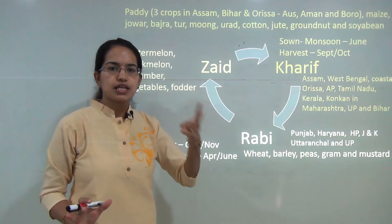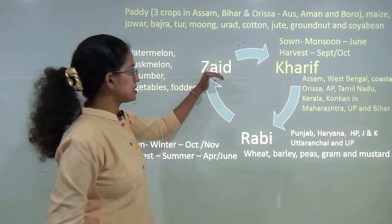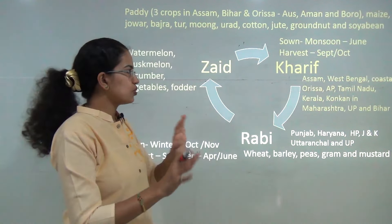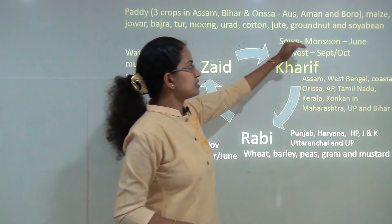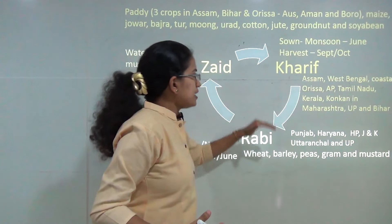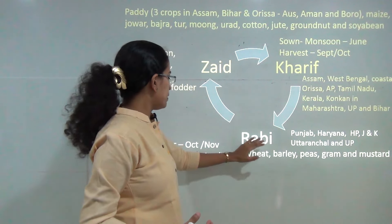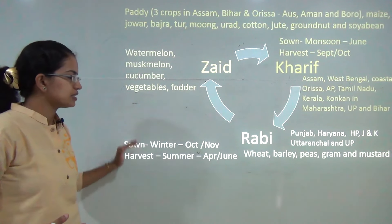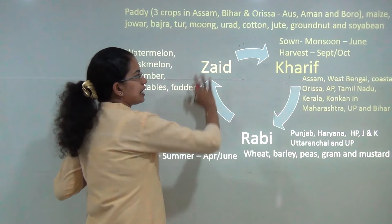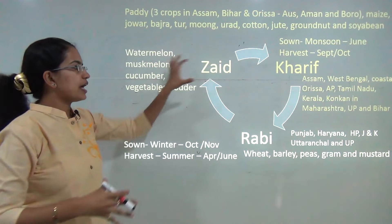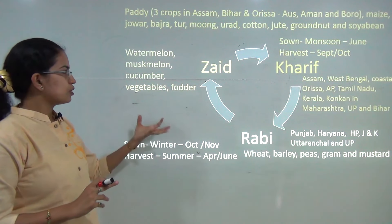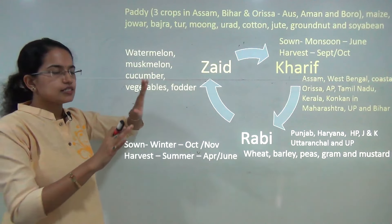There are predominantly three crop seasons: the Kharif season, Rabi season, and Zayad season. Kharif crop is sown in monsoon and harvested in September or October. As soon as the Kharif crop is done, Rabi crop is sown in winter and harvested in summer in the months of April to June. The intermediate period between Rabi and Kharif is occupied by Zayad, which is predominantly vegetables — watermelon, muskmelon, cucumbers.